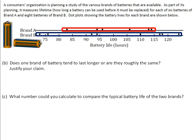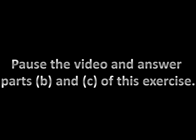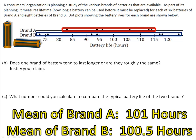Part B asks which battery tends to last longer, or are they approximately the same? Justify your claim. Part C asks what number you could calculate to compare the typical battery life of the two brands. It turns out the mean of brand A is 101 hours and the mean of brand B is 100.5 hours. On average, brand A and brand B batteries last about the same amount of time. But brand B shows that batteries can last far fewer or far more hours than 100.5 — the red values are far more consistent.